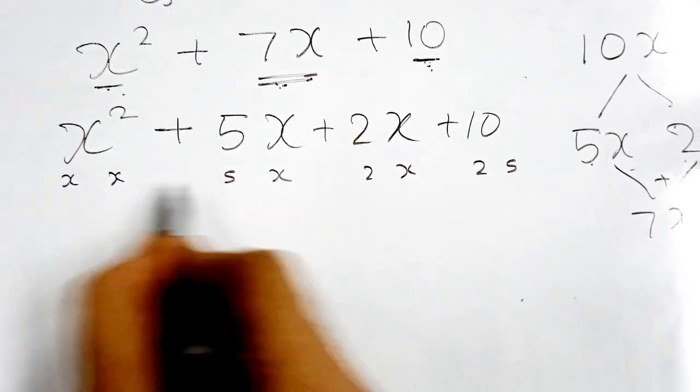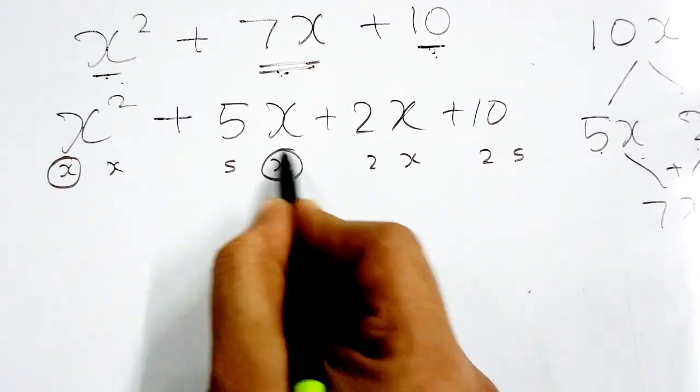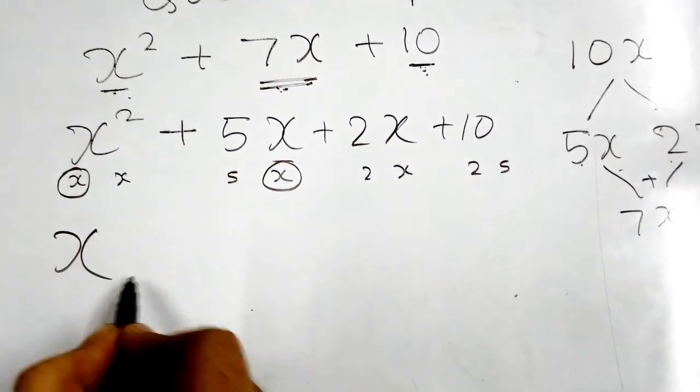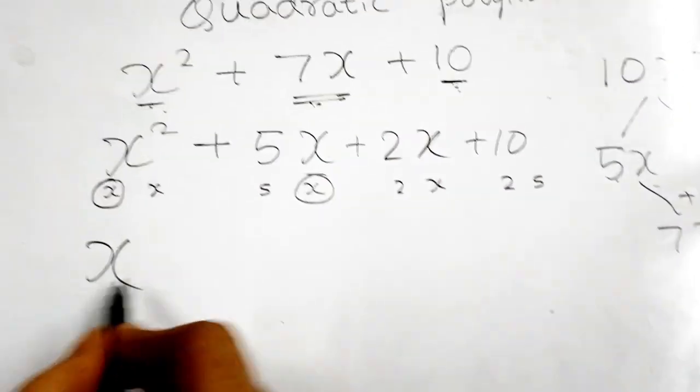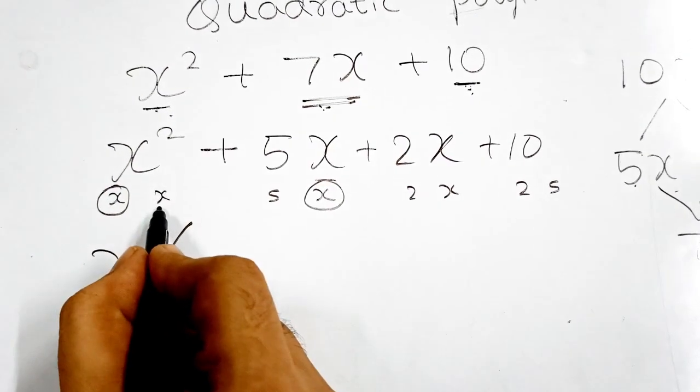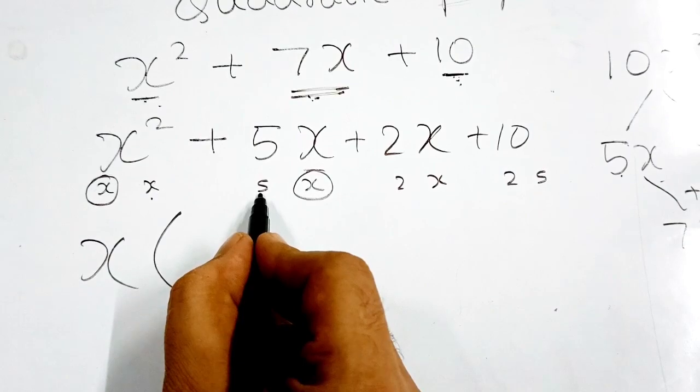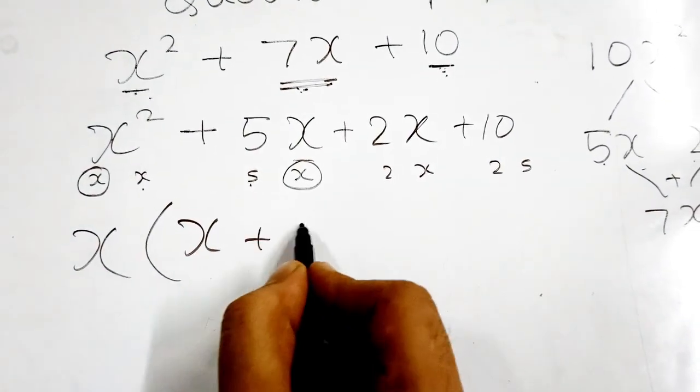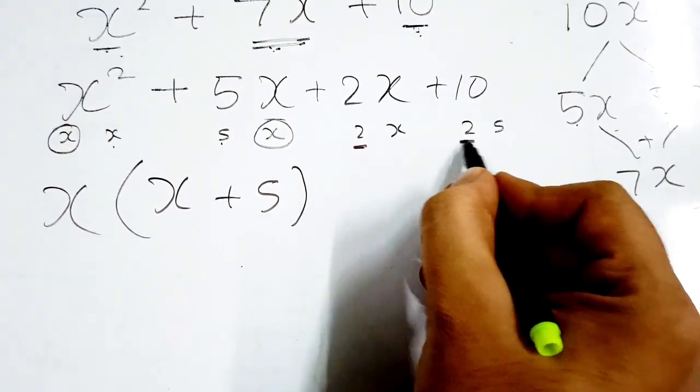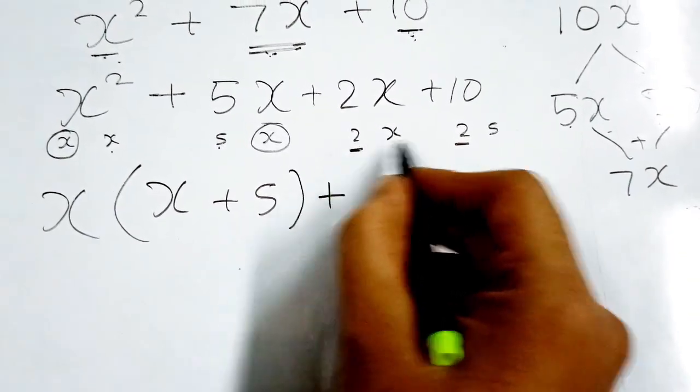Now see the common in these two terms. Here x and here is also x. I can take x common. X is common, the remaining is x plus 5. The remaining is x plus 5.